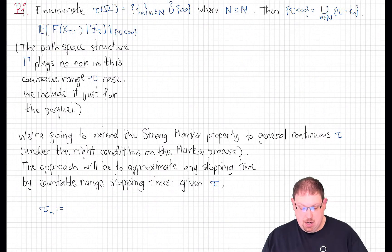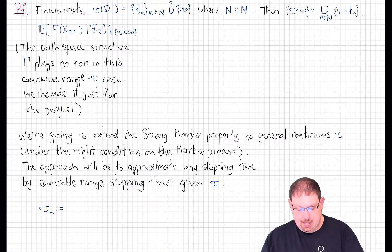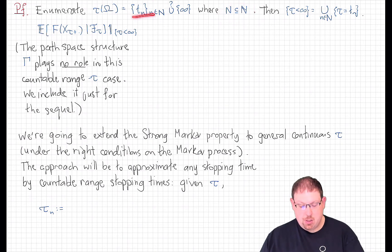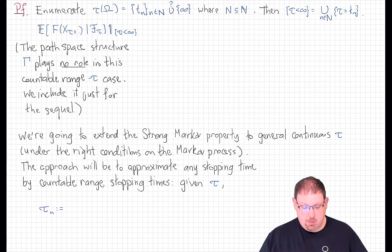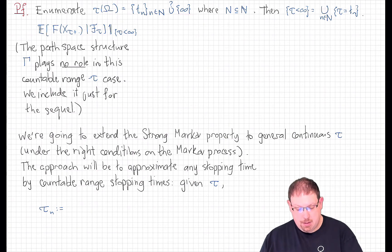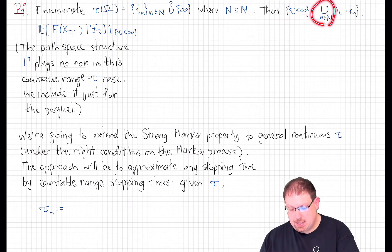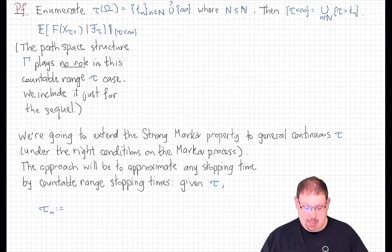We'll start by enumerating the range of the stopping time tau. Let's denote it as the set of times t_n with n ranging through some indexing set, which might be a proper subset of the natural numbers because this range could even be finite. We may or may not have infinity as a possible value for tau. We will not list it among the index times t_n, so that we can enumerate the event tau less than infinity as the union of this countable family of events that tau equals one of the t_n's.